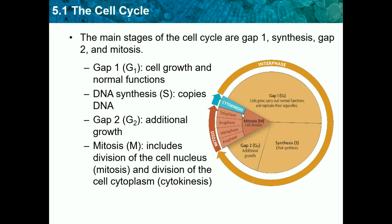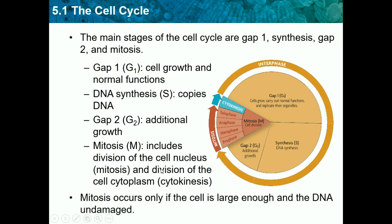We need to know the orientation of this graph — which stage starts first and which ends last. The order goes from Gap 1 to Synthesis, to Gap 2, and then to Mitosis. Remember this orientation. Also, mitosis only occurs if the cell is large enough and the DNA is undamaged. If the DNA is damaged, the cell probably won't undergo mitosis.